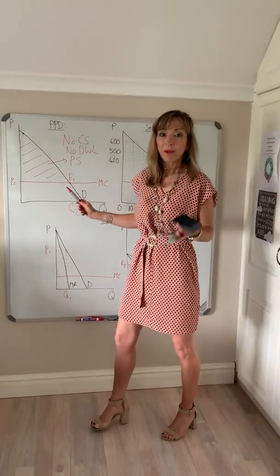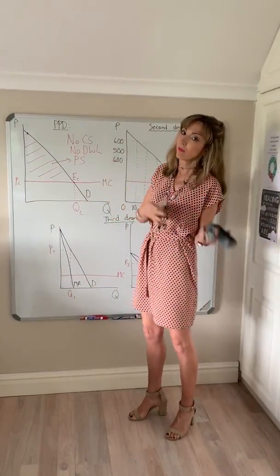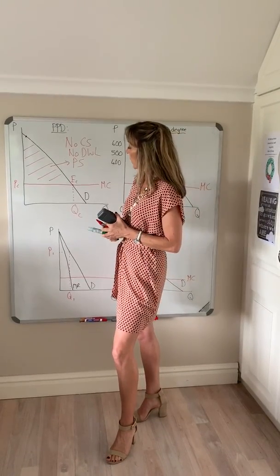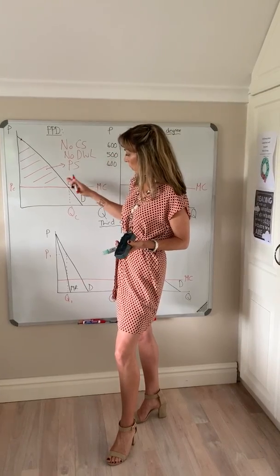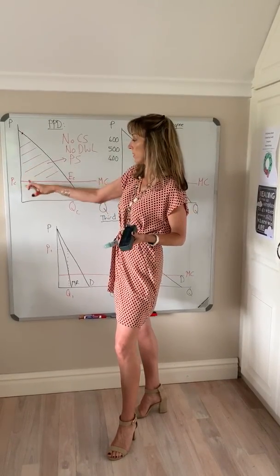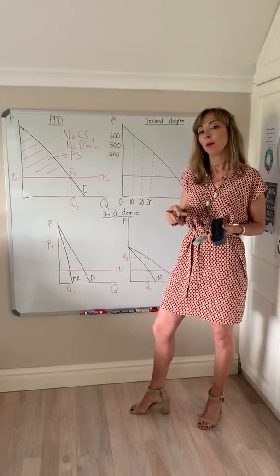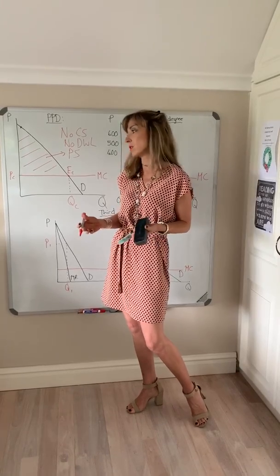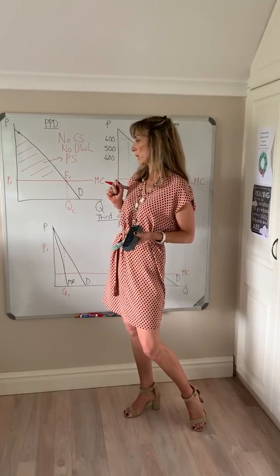A key difference from perfect competition is that there is no consumer surplus remaining. There's also the fact that only the last consumer pays a price equal to marginal cost on that last unit. You do not have price equal to marginal cost, or allocative efficiency, across all units as is the case with perfect competition.